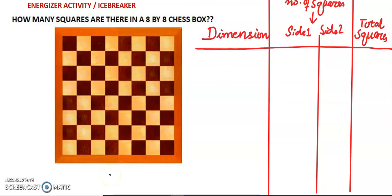To solve this question, I take this side as side 1 and this side as side 2 of the square. First of all, if we take the tiniest square in this chess box — that is, if I take the dimension as 1 by 1 — then we see how many squares are there along side 1 and how many squares are there along side 2. So let's have a look.